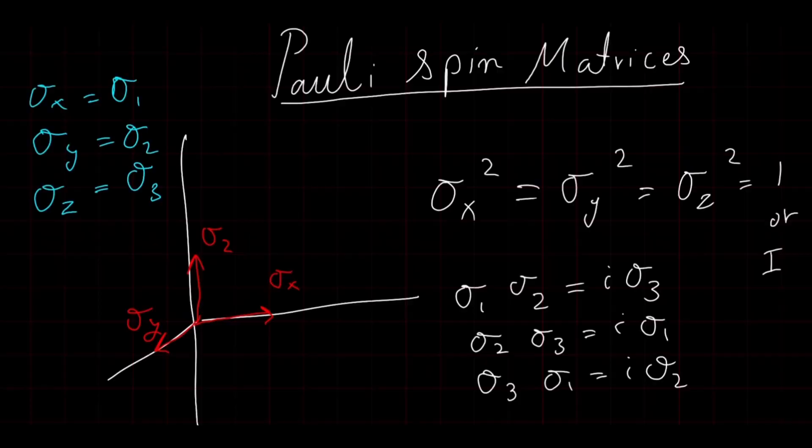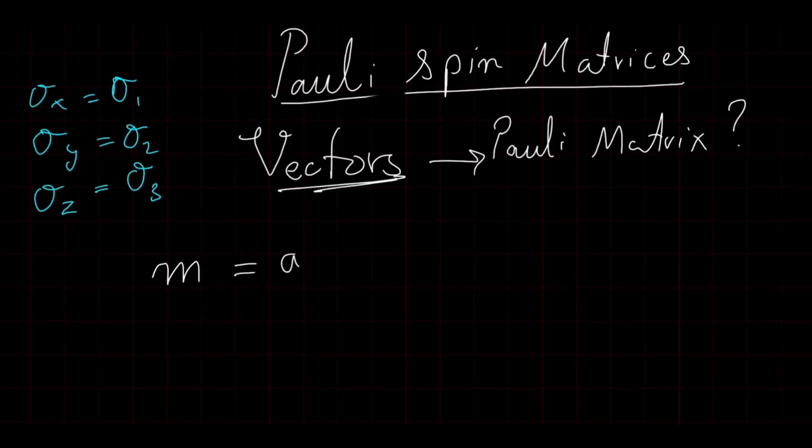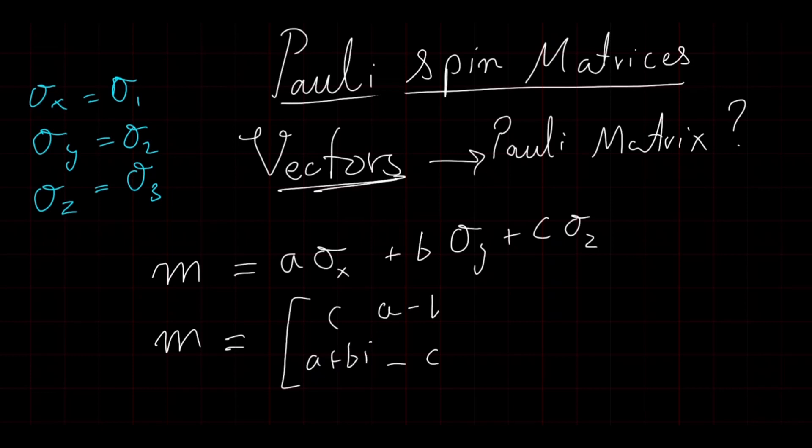Now let's represent a 3D vector in the form of Pauli matrices like we did before with the normal basis vectors. So like before, we take the linear combination. The vector m is equal to a times sigma x plus b times sigma y plus c times sigma z, where sigma x, sigma y, sigma z represent the basis for the 3D space, and a, b, c are the components of the 3D vector. Now we get m is equal to the matrix [c, a+bi; a-bi, -c]. Now we have a way to represent a 3D vector as a 2D complex matrix.